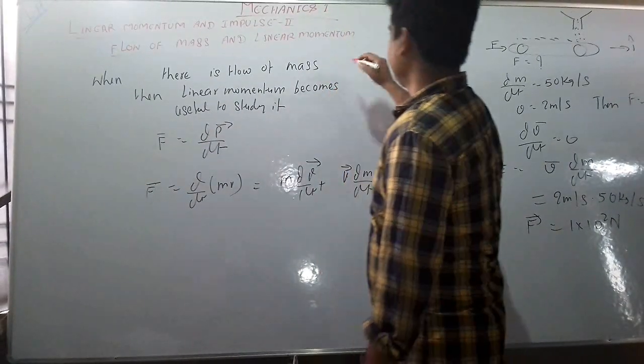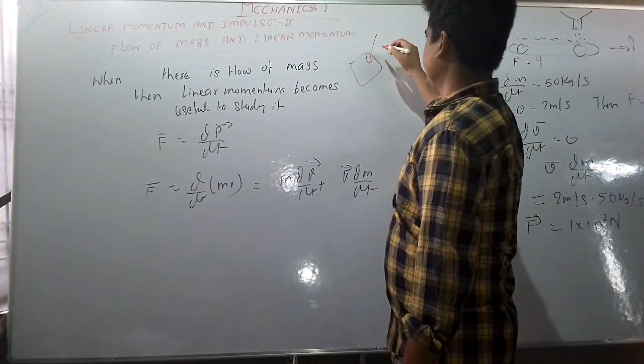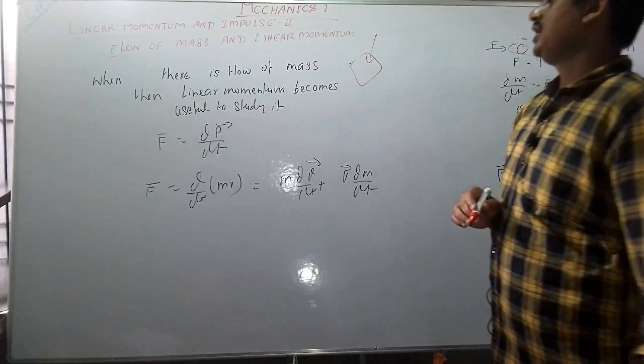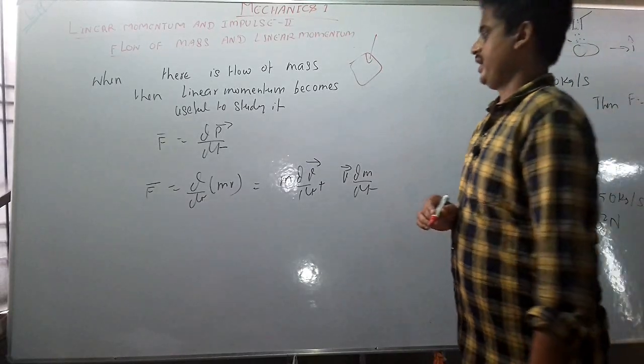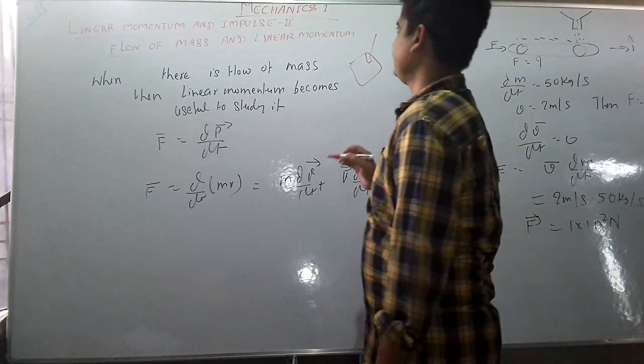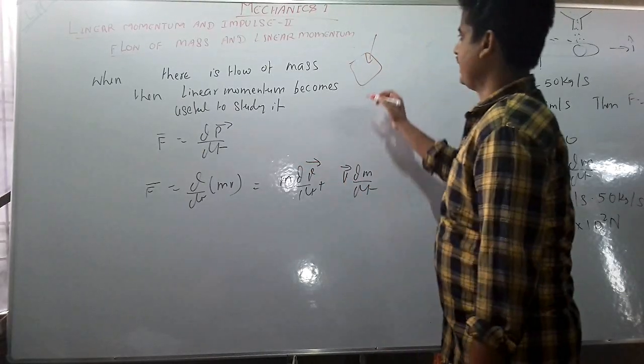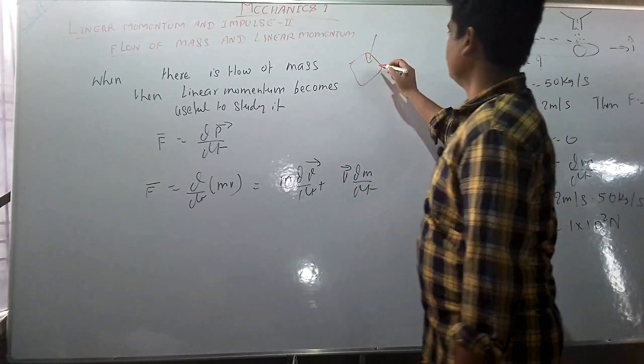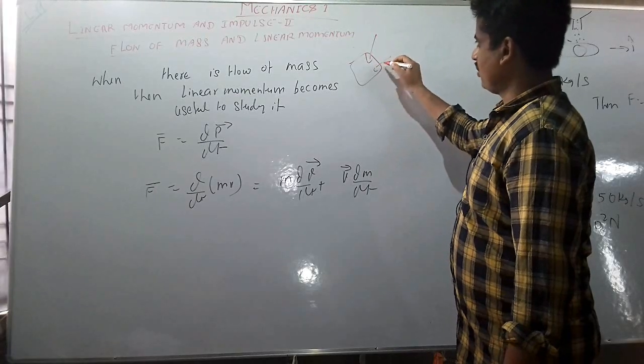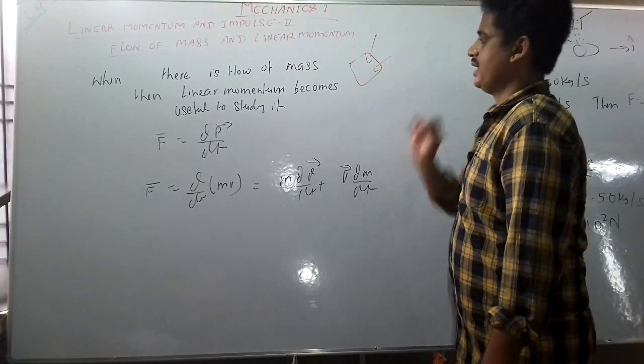So suppose there is a system and there is mass pouring into the system. Then we can use the concept of linear momentum. How we can use the idea of linear momentum to solve this problem of variable mass.